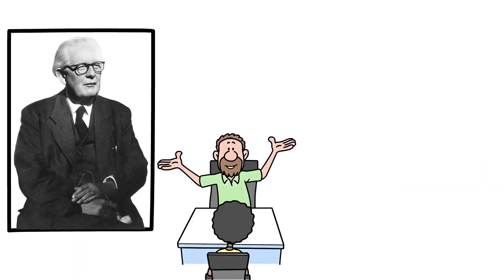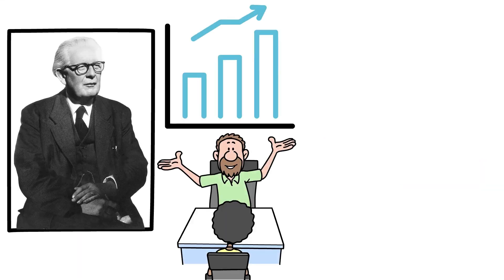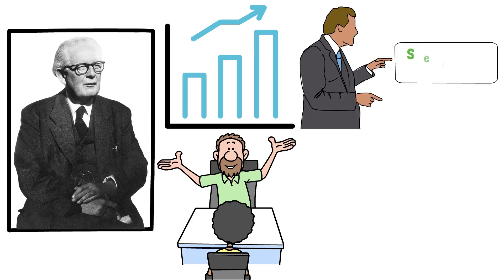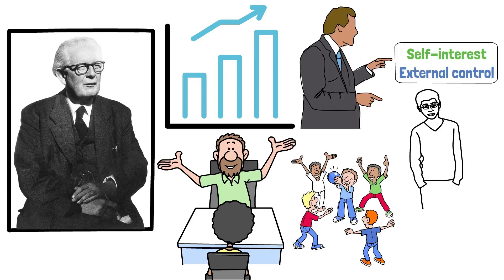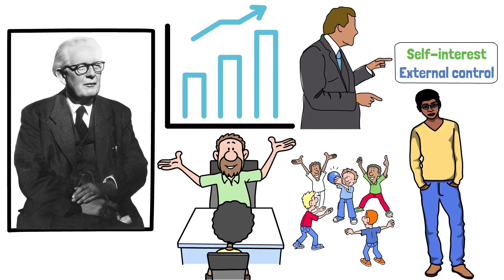Piazza's theory explains that moral reasoning develops from a focus on self-interest and external control in childhood to more complex, abstract reasoning in adulthood.